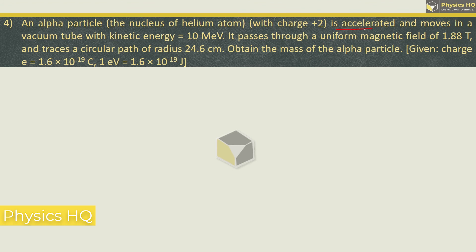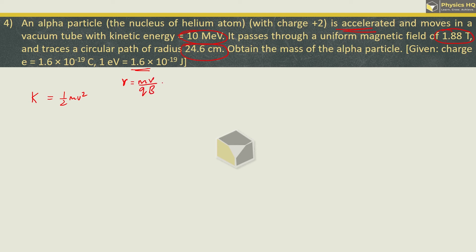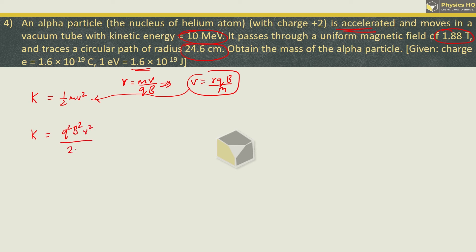An alpha particle is accelerated and moves in a vacuum tube with kinetic energy 10 mega electron volt. It passes through a uniform magnetic field of 1.88 tesla and traces a circular path of radius 24.6 cm. Obtain the mass of the alpha particle. We know radius r = mv/(qB), so velocity v = rqB/m. Substituting into KE = ½mv², kinetic energy = q²B²r² / (2m). Rearranging: m = q²B²r² / (2 × KE).